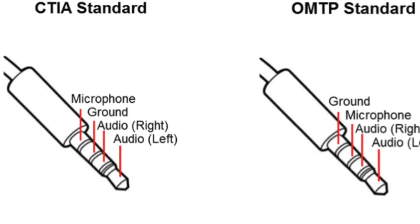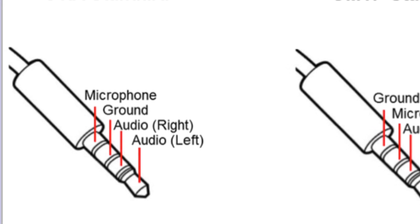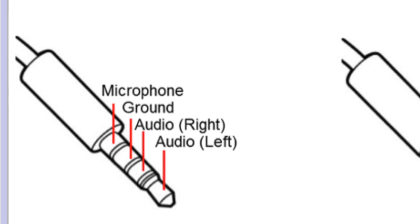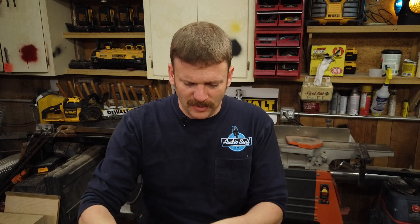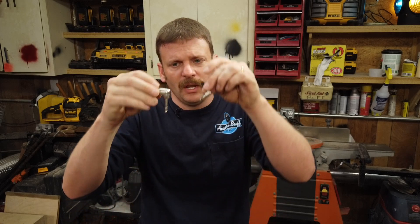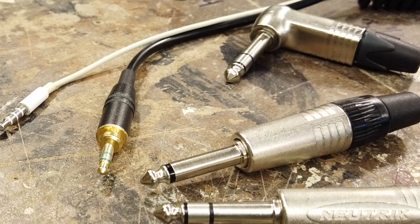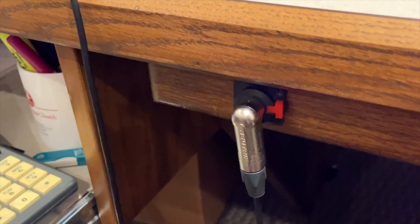It's commonly wired in the CTIA-AHJ wiring code: left earphone, right earphone, ground, and microphone. They offer the quarter-inch and eighth-inch in right-angle options. These are great if you have a tight quarter or don't want your wire coming straight out — you want it to hang down. They're pricey, but it's well worth it.